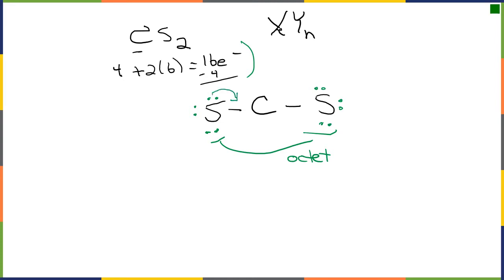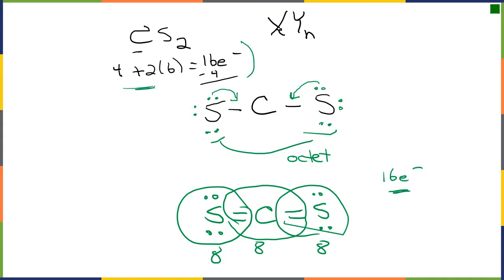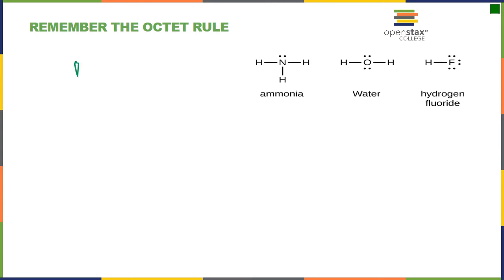We shift electrons off the sulfur — it doesn't matter which pair — and bring them in to form double bonds between carbon and sulfur. Each sulfur retains four electrons as lone pairs. Now this is eight, this is eight, and this is eight — the octet rule is obeyed for all atoms using only 16 electrons. Next let's consider NH3, H2O, and HF.